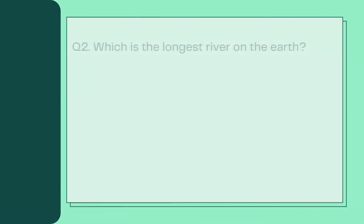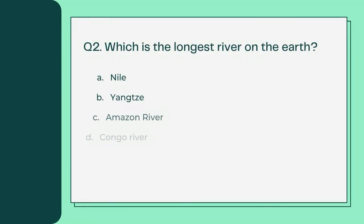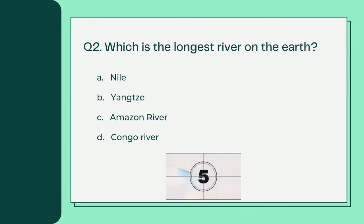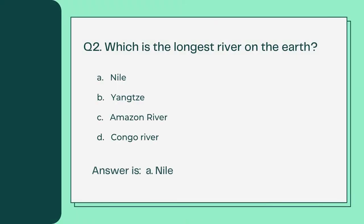Which is the longest river on the earth? A. Nile B. Yangtze C. Amazon River D. Congo River. Answer is A. Nile.